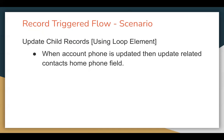I am going to demonstrate how you can update a child record once your parent record is updated — this is a parent-to-child field update, and I am going to demonstrate it with the help of the loop element. In a previous demo I explained the same requirement without using the loop element, but you should know how to use the loop element in RecordTriggerFlow. The requirement says: when account phone is updated, then we need to update the related contact's home phone field.